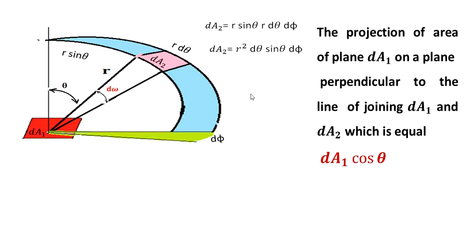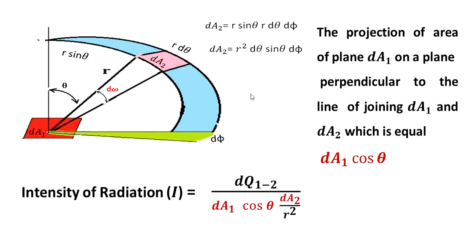The projection of area of the plane dA_1 on the plane perpendicular to the line joining dA_1 and dA_2 is equal to dA_1 cos theta.